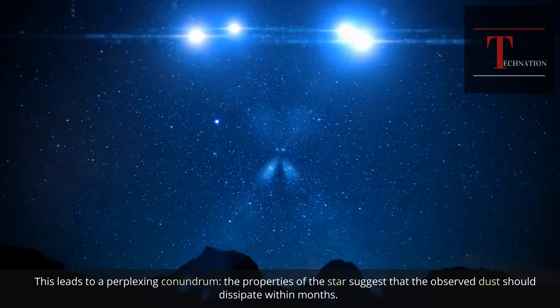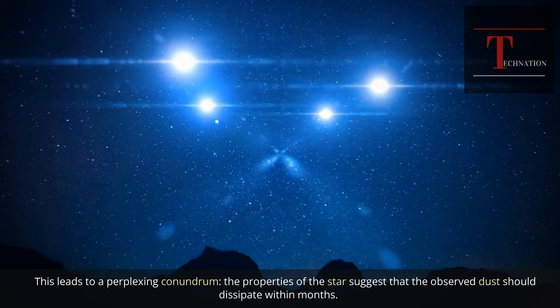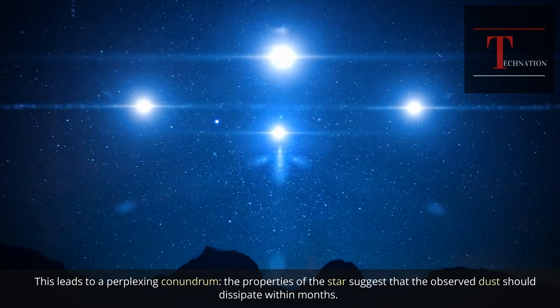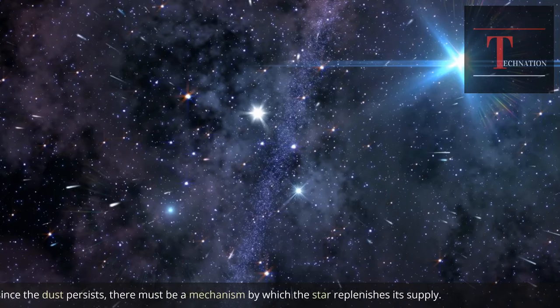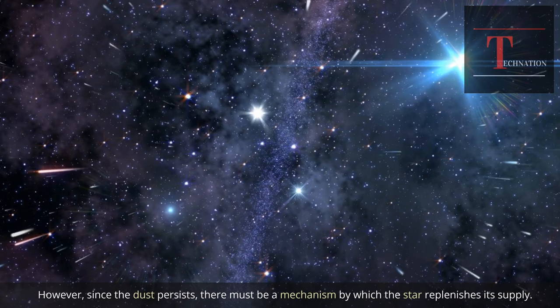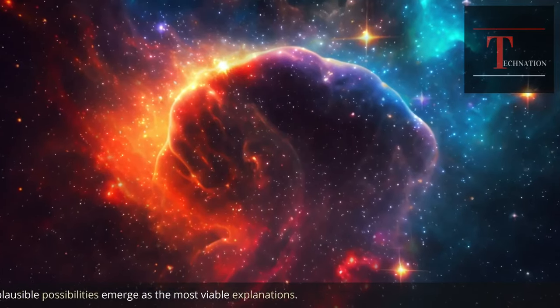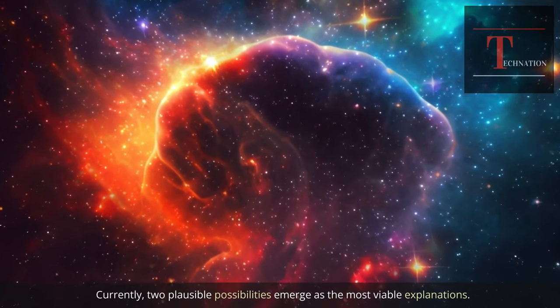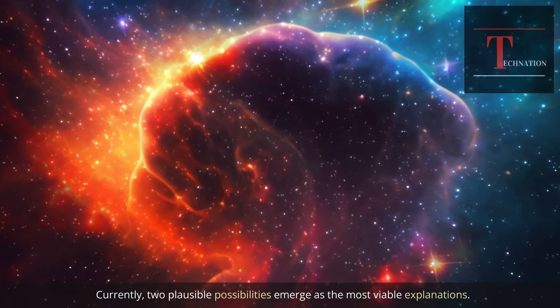This leads to a perplexing conundrum. The properties of the star suggest that the observed dust should dissipate within months. However, since the dust persists, there must be a mechanism by which the star replenishes its supply. Currently, two plausible possibilities emerge as the most viable explanations.